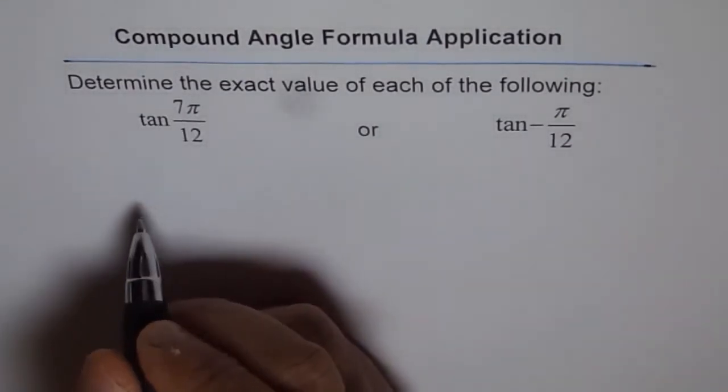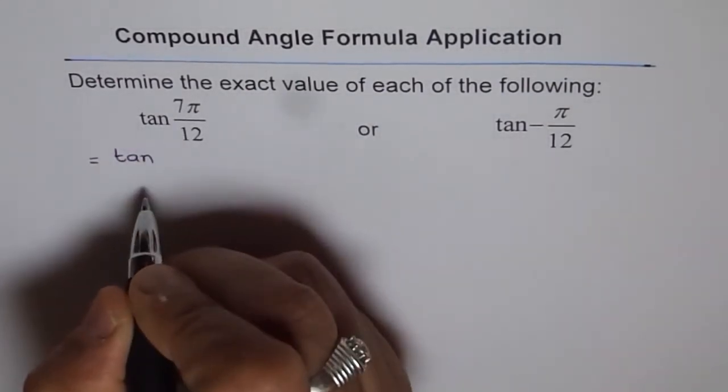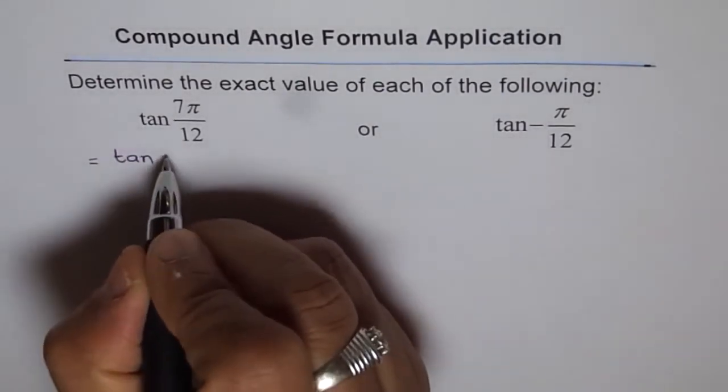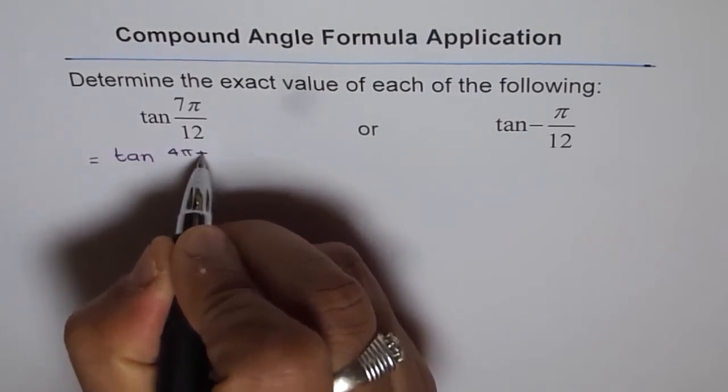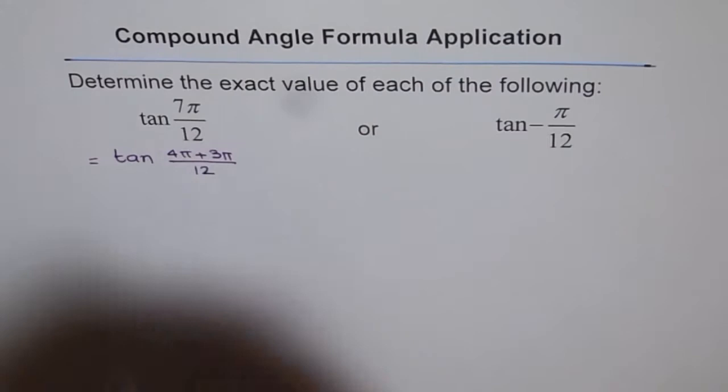Now tan 7π/12. We can write this as tan... 7π could be written as 4 plus 3. So we will write 4π plus 3π over 12. That is 7π/12.